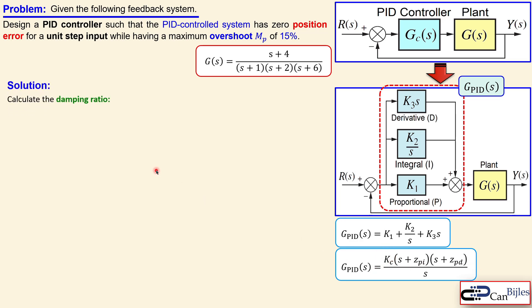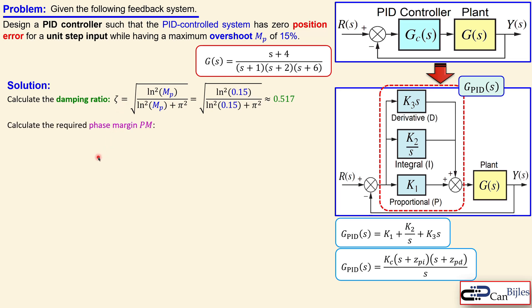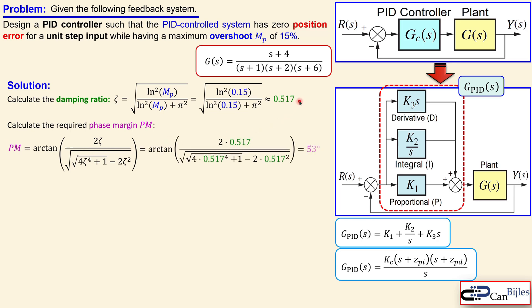We start with the calculation of the damping ratio from the specifications. We know the overshoot MP is 0.15 or 15 percent. Using the standard second-order system formula, this gives a damping ratio ζ of approximately 0.517. Using this damping ratio with the frequency response method formula, we calculate the required phase margin as 53 degrees.